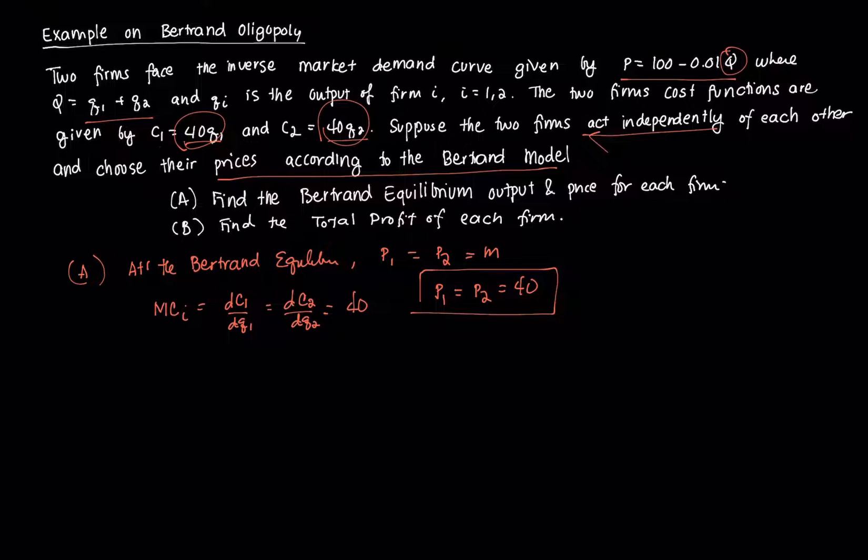Then to get Q, we can just substitute that in the demand equation. So we have 40 equal to 100 minus 0.01Q. Then we can get negative 60 equal to negative 0.01Q. Divide both sides by negative 0.01. Then we get Q is equal to 6,000. So there will be 6,000 as the total market demand.